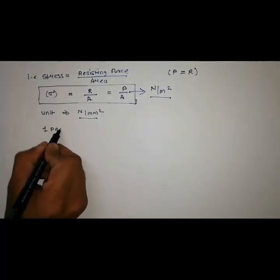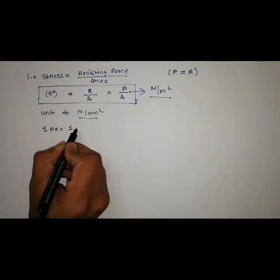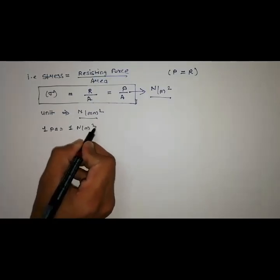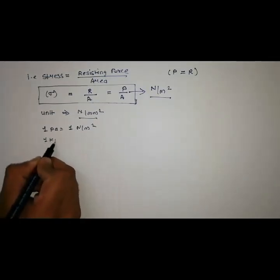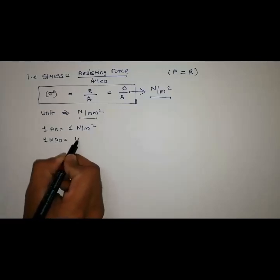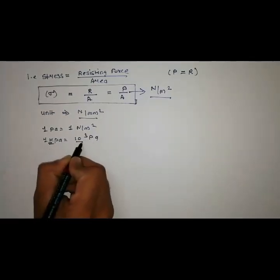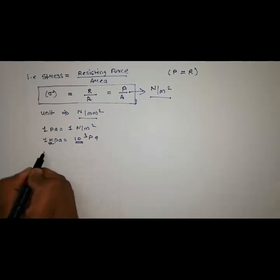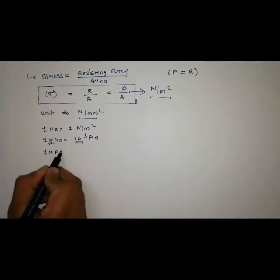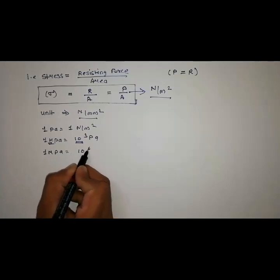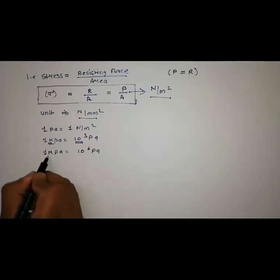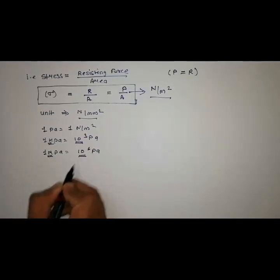As we know, 1 KPa is 10 raised to the power 3 Pa. This K stands for 10 raised to the power 3. 1 Megapascal means 10 raised to the power 6 Pa. Here, M stands for 10 raised to the power 6.